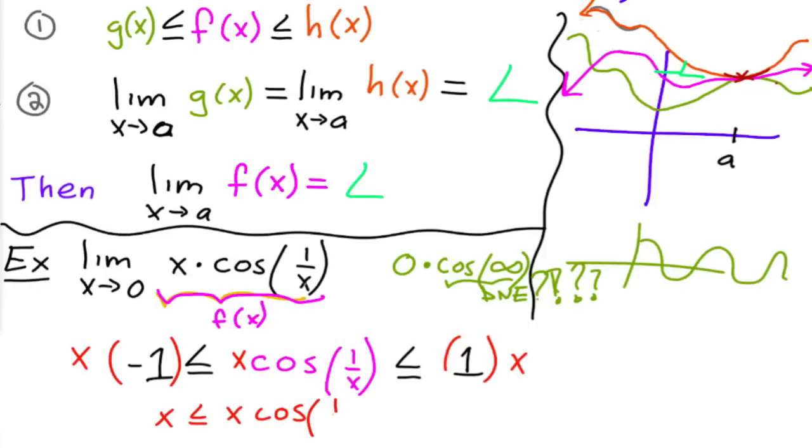Then what you can do is if you multiply everything by x, then what you get is that negative x is less than or equal to x times cosine of 1 over x, is less than or equal to x.